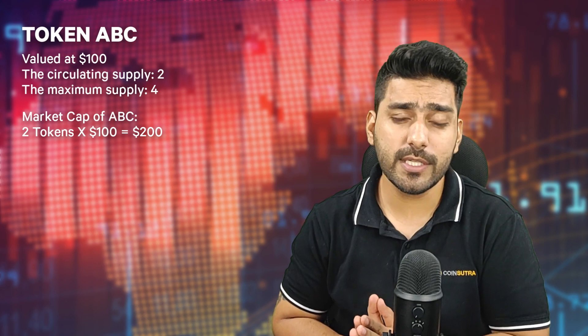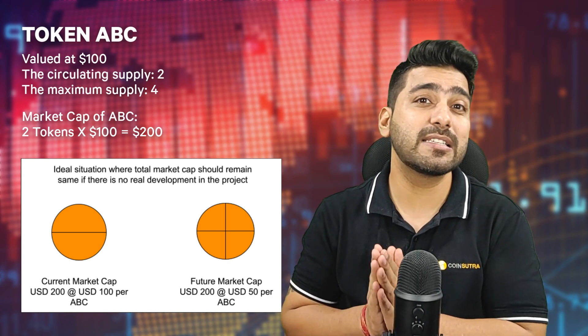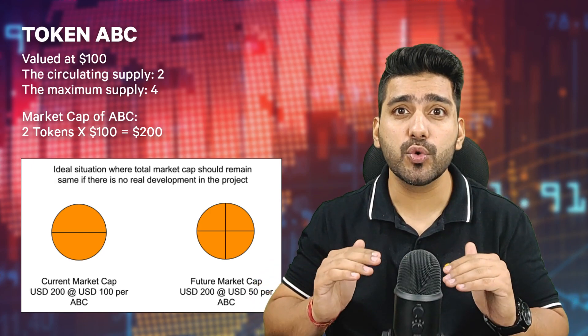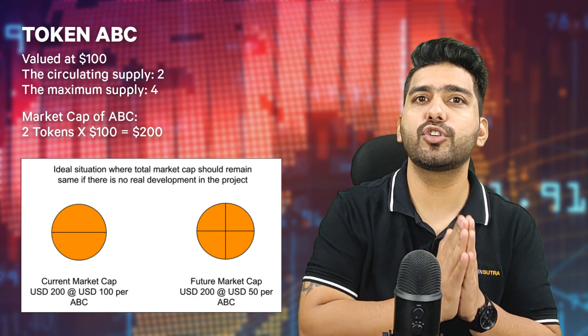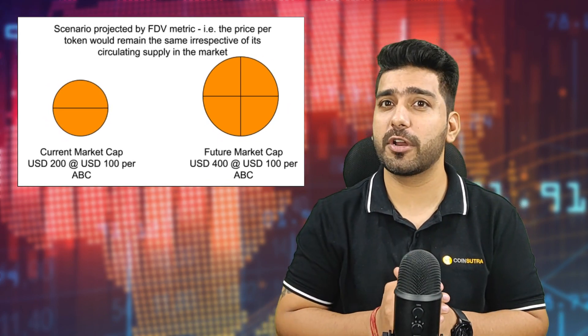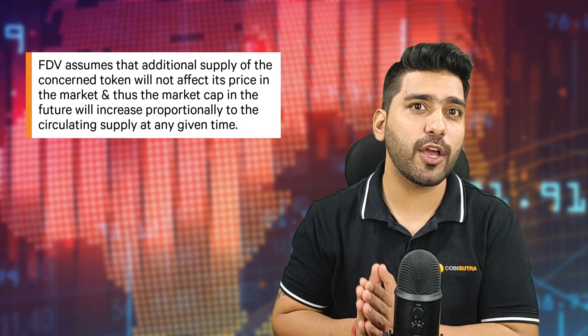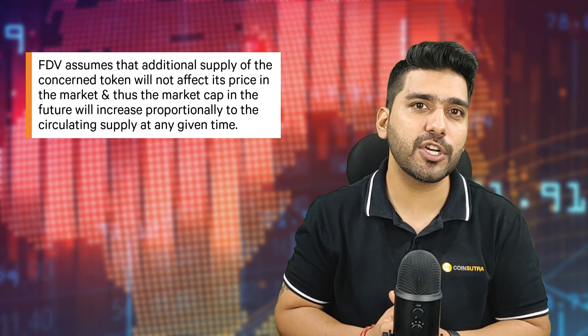Let's understand this with another example. Suppose there is a token, let's call it ABC, valued at $100 with a circulating supply of two tokens and a maximum supply of four. The market cap of ABC will be two tokens multiplied by $100, which is $200. In an ideal situation with no development in the project, the market cap should remain the same, meaning the price should fall to $50 as supply increases. As you can see in the diagram, FDV would be $400 in this case, as it assumes the price would remain $100. Therefore, FDV assumes that additional supply will not affect the token's price, and thus the future market cap will increase proportionally to circulating supply.